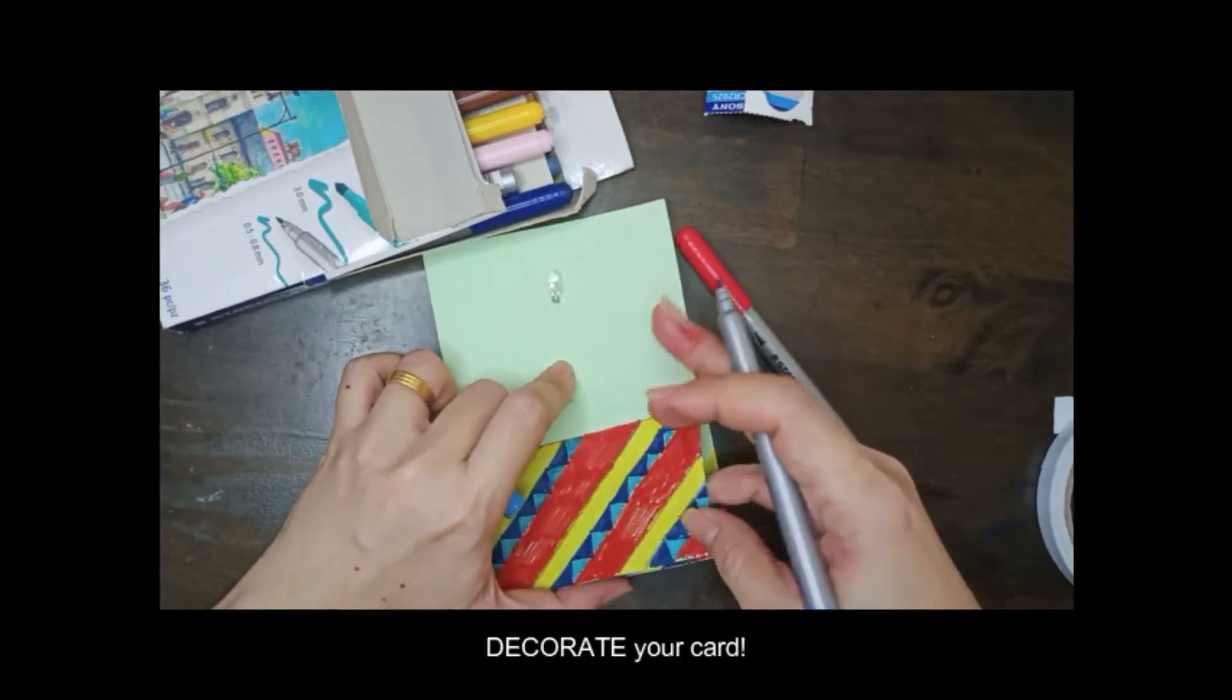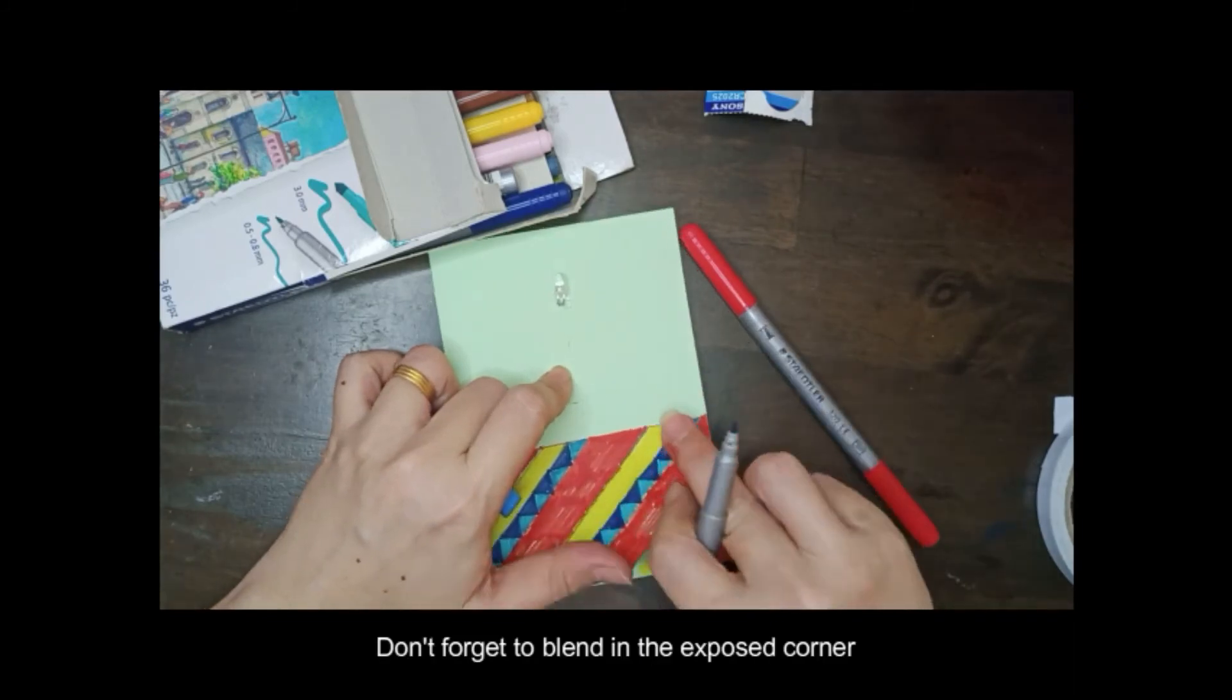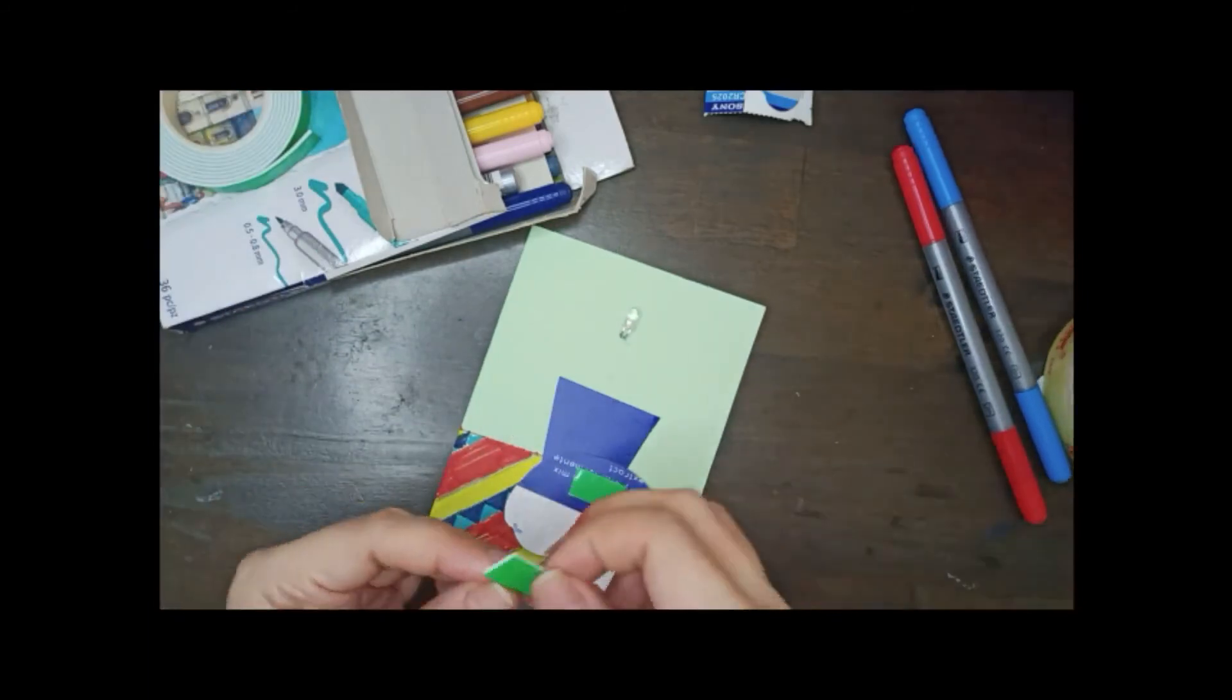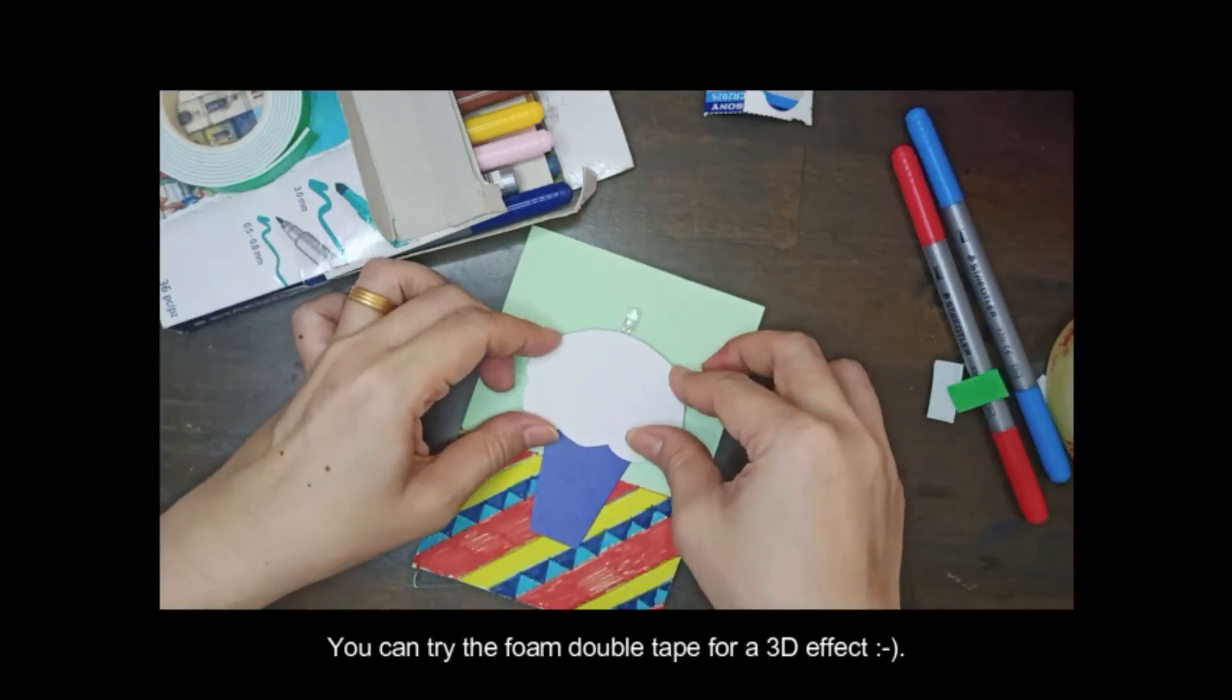Lastly, decorate your card. Don't forget to blend the exposed corner. You can try the foam double tape for a 3D effect.